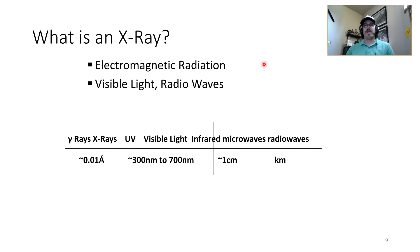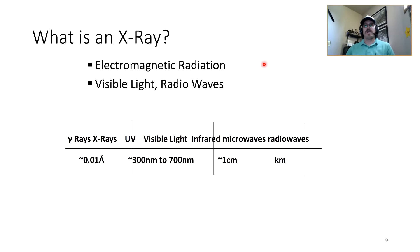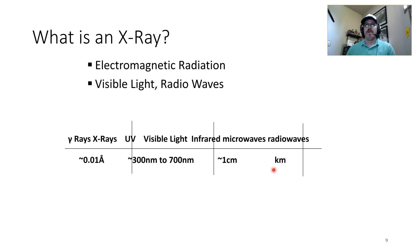What is an x-ray? An x-ray is electromagnetic radiation — just like visible light and radio waves. Gamma rays and x-rays are on the angstrom or fraction-of-an-angstrom level. UV light is around 300 nanometers, visible light around 700 nanometers, microwaves around one centimeter, and radio waves can be as long as a kilometer in wavelength. Shorter wavelengths yield higher energy.